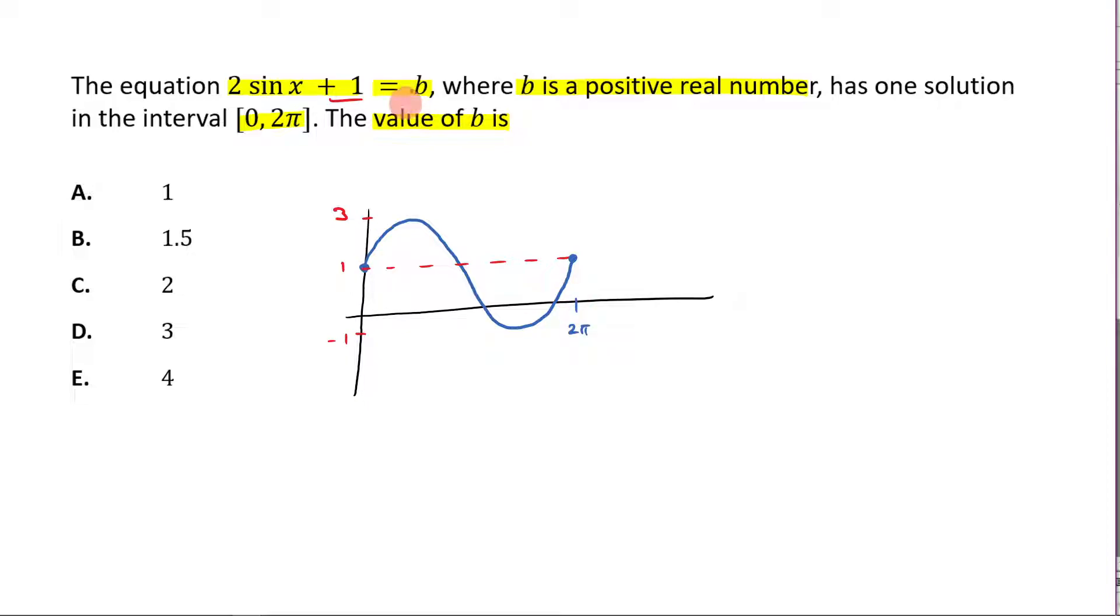Now I need to figure out what b would be in order that it has one solution. So this means it intersects the graph once. So where could that be? Well, if it was at 1, do you see how it intersected 3 times? 1, 2, 3. So that's no good. So that eliminates that.